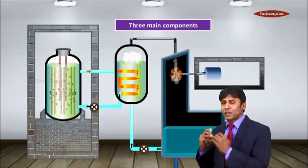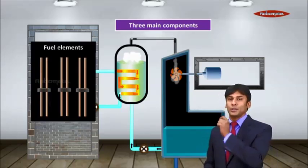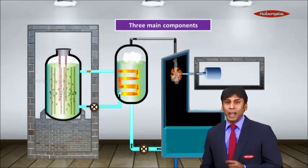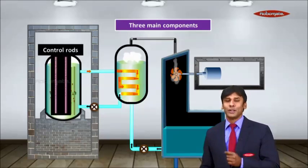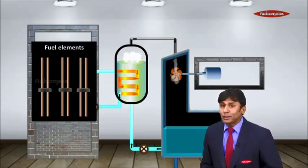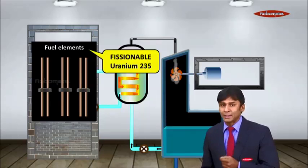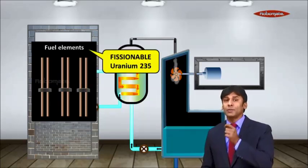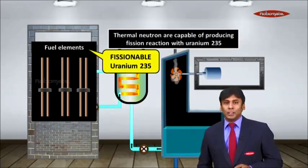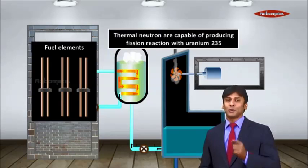There are three main components of a nuclear reactor. The first component is a fuel element, the second component is a moderator, and the third component is control rods. Let us learn each of them in detail. The main fuel element is fissionable uranium-235, or plutonium-239 can also be used. Thermal neutrons are capable of producing fission reactions with uranium-235.